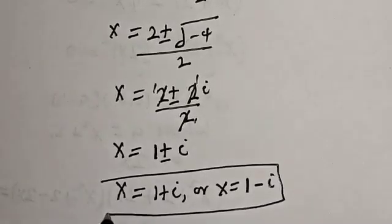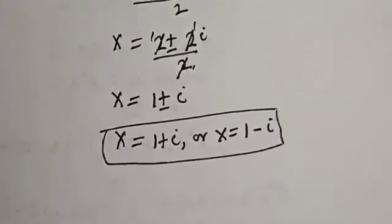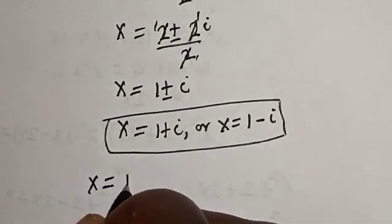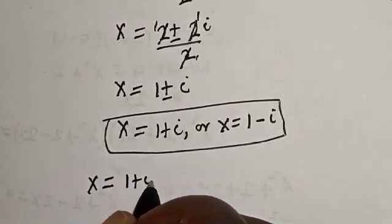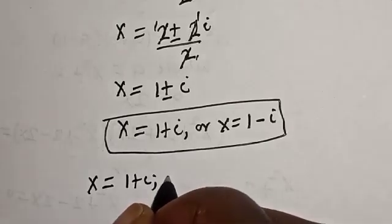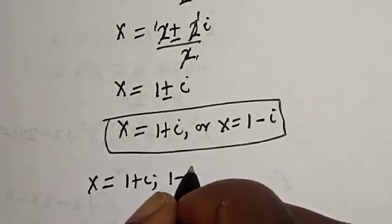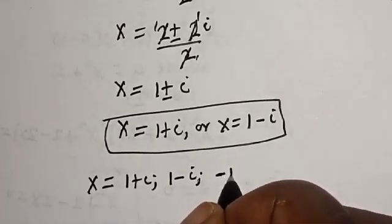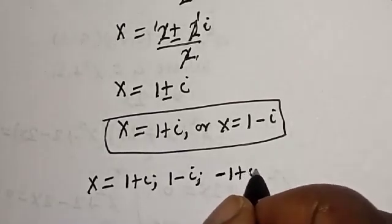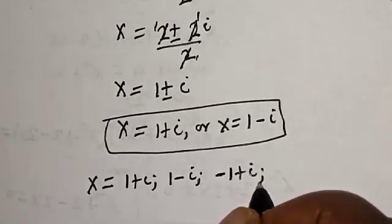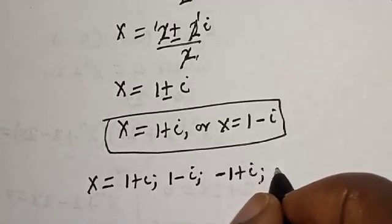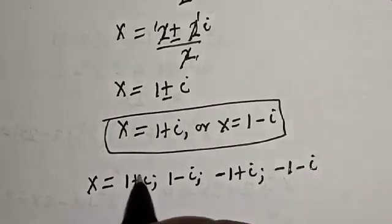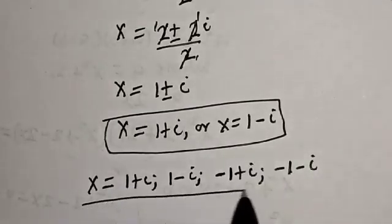Therefore the roots of the equation are x is equal to 1 plus i, x is equal to 1 minus i, x is equal to minus 1 plus i, and x is equal to minus 1 minus i. That is our final answer.